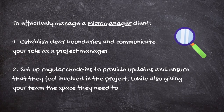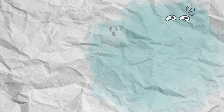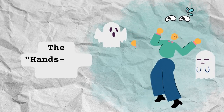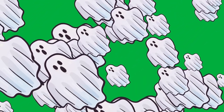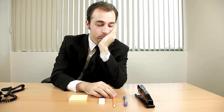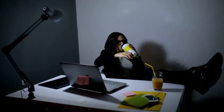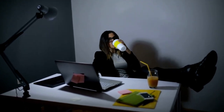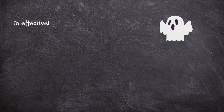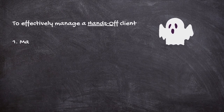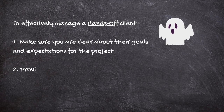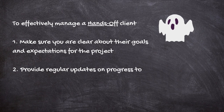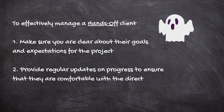The third type of client is the hands-off client. These clients may be less involved in the day-to-day details of the project and may not provide much feedback or input. While this may seem like an easier client to manage, it's important to remember that they still have expectations for the final outcome. To effectively manage a hands-off client, make sure you are clear about their goals and expectations for the project, and provide regular updates on progress to ensure that they are comfortable with the direction of the project.